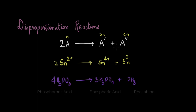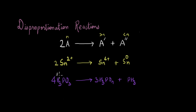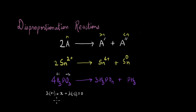Let's take one more example: H₃PO₃ decomposing to give H₃PO₄ and PH₃. We'll look at the oxidation state of phosphorus in all three species. Hydrogen is +1, oxygen is −2, and the molecule is neutral so all oxidation numbers sum to 0. So: 3(+1) + x + 3(−2) = 0, giving x = +3. The oxidation state of phosphorus in H₃PO₃ is +3.